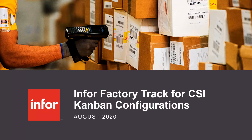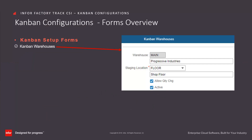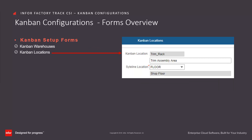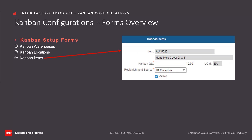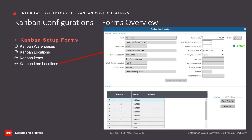Factory Track supports the setup of Kanban through configurations on several forms. These include the Kanban Warehouses form to specify which CSI warehouses will support Kanban processing and define the staging location for Kanban replenishment. The Kanban Locations form to identify which Factory Track-specific location will maintain Kanban bins or racks. The Kanban Items form to identify which CSI items will be available for Kanban processing. The Kanban Item Locations form marries three configurations of warehouses, locations, and items to support the generation and maintenance of the Kanbans.